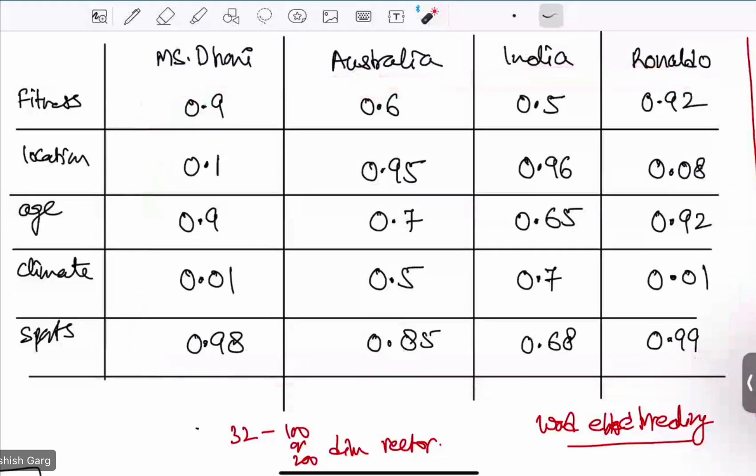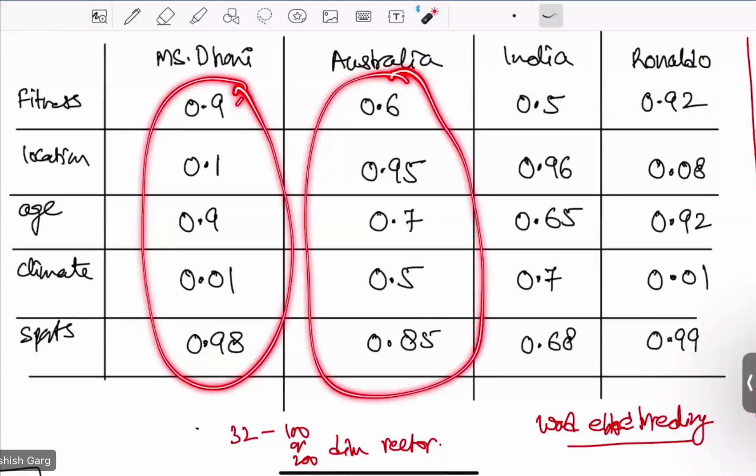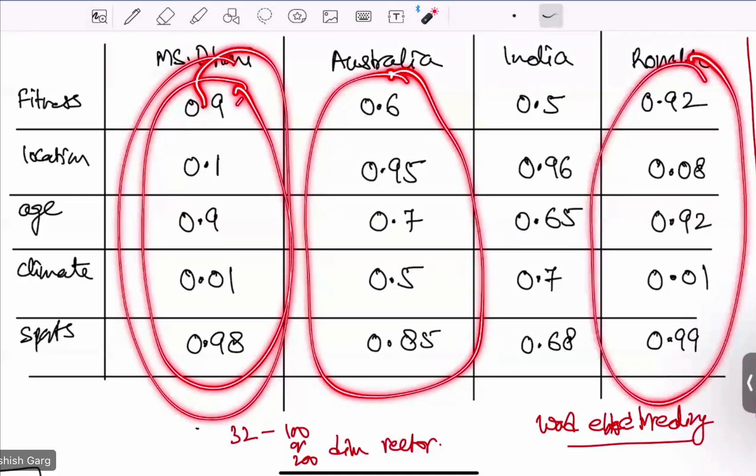Here, how the semantics are maintained. See, this word and this word, are they similar, or this word and this word, are they similar? We are able to find it. How?